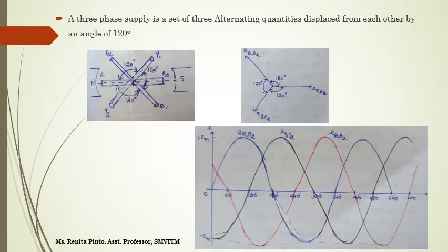A three-phase supply is a set of three alternating quantities displaced from each other by an angle of 120 degrees.